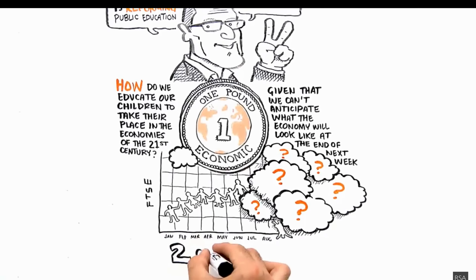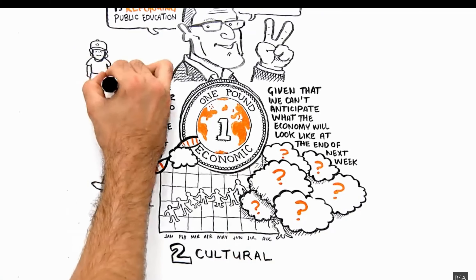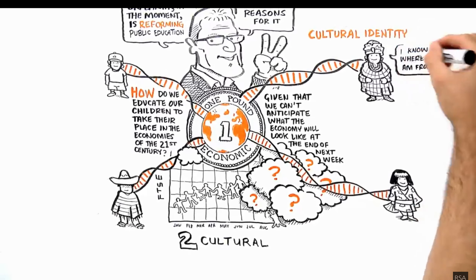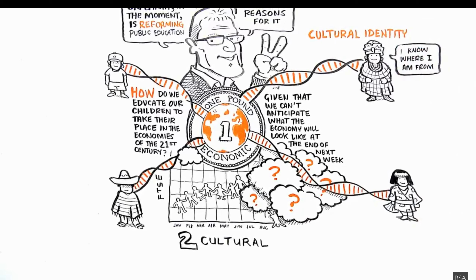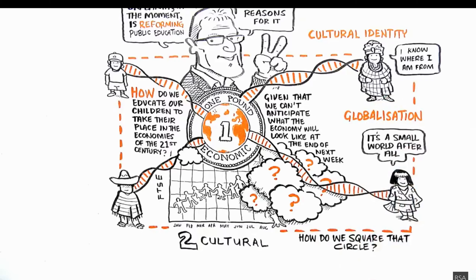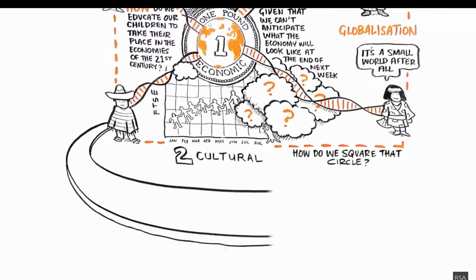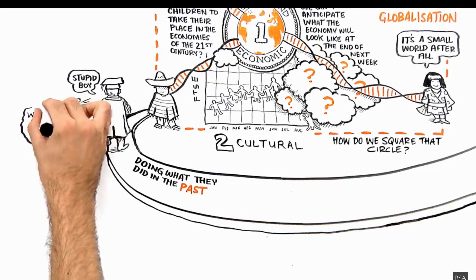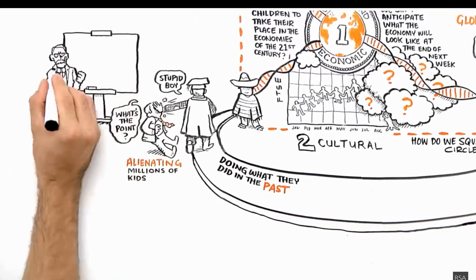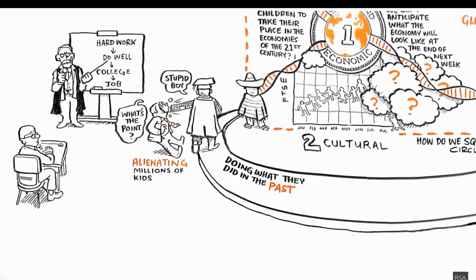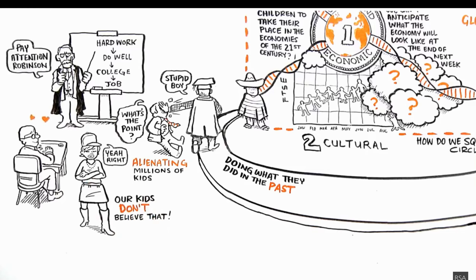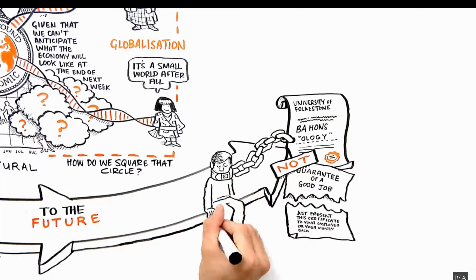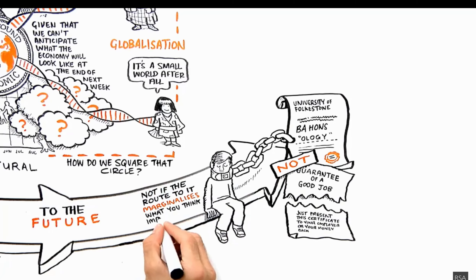The second reason is cultural. Every country on earth is trying to figure out how to educate children so they have a sense of cultural identity and can pass on the cultural genes of their communities while being part of globalization. The problem is they're trying to meet the future by doing what they did in the past, and on the way they're alienating millions of kids who don't see any purpose in going to school. When we went to school, we were kept there with a story: if you worked hard, did well, and got a college degree, you'd have a job. Our kids don't believe that — and they're right not to. You're better off having a degree than not, but it's not a guarantee anymore.